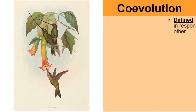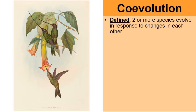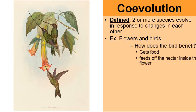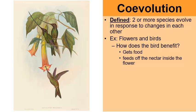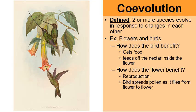Let's move on to co-evolution: two or more species evolve in response to changes in one another. The classic example is the relationship between hummingbirds and flowers. Notice the long beaks on the hummingbirds, and notice how the bird at the bottom is feeding on a flower tube that's equally as long. The hummingbirds benefit by getting food — they feed off the nectar inside the flower. The flower benefits through reproduction: as the birds fly from flower to flower, they spread pollen and allow the flowers to reproduce. This is a neat classic example of co-evolution.